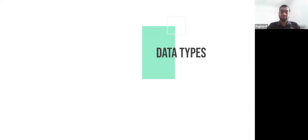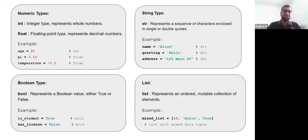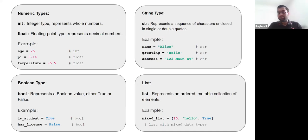So what data types does Python offer to us? Python offers the numeric data type, which is basically the integer and float data types. Floats are also called double in some other programming languages, but for Python, float and double are the same.